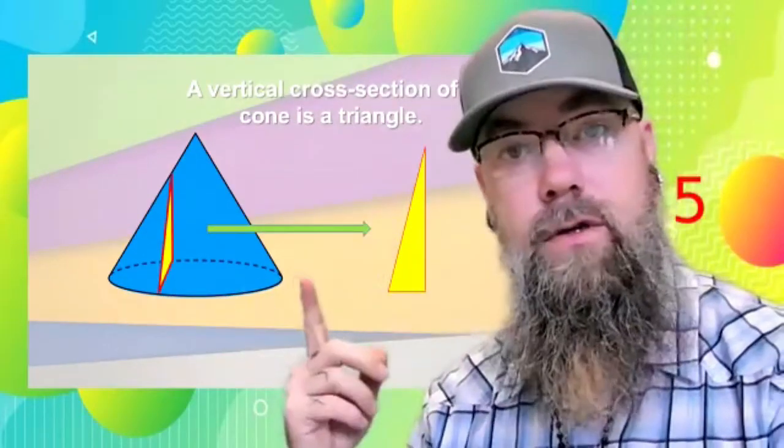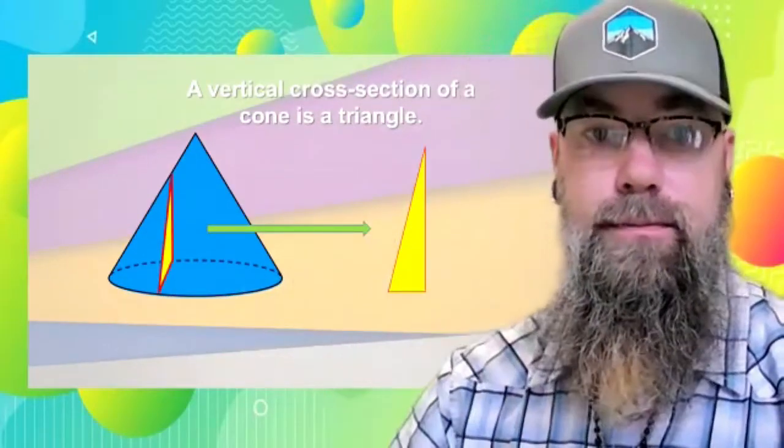And if we take a vertical cross-section of this cone, we will get a triangle. This graphic here lists the different shapes and the type of cross-section you'll get.